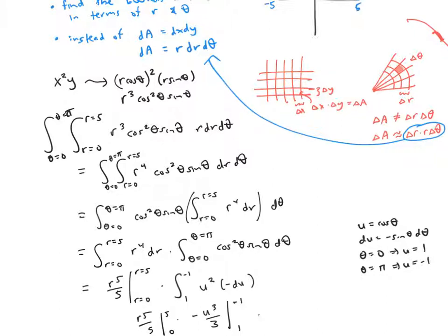After some arithmetic, this works out to 1250 over three.